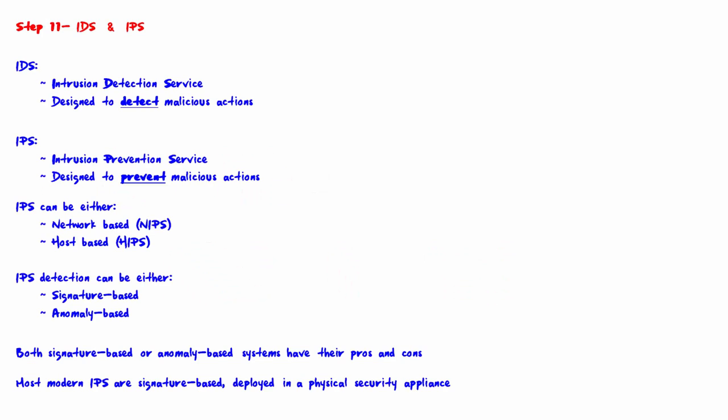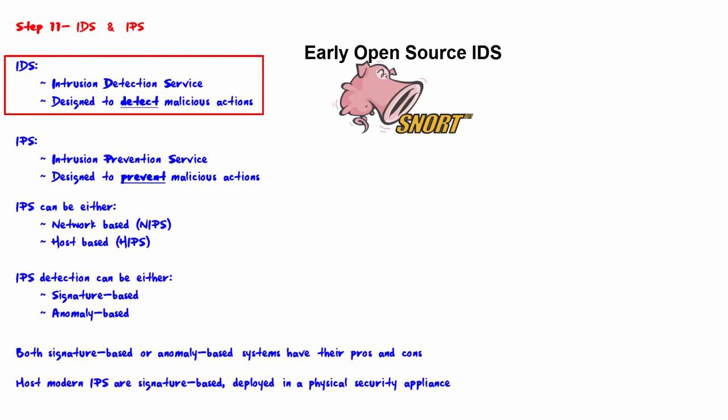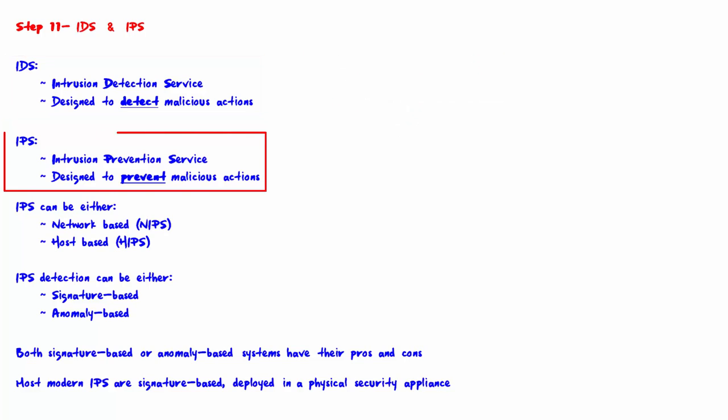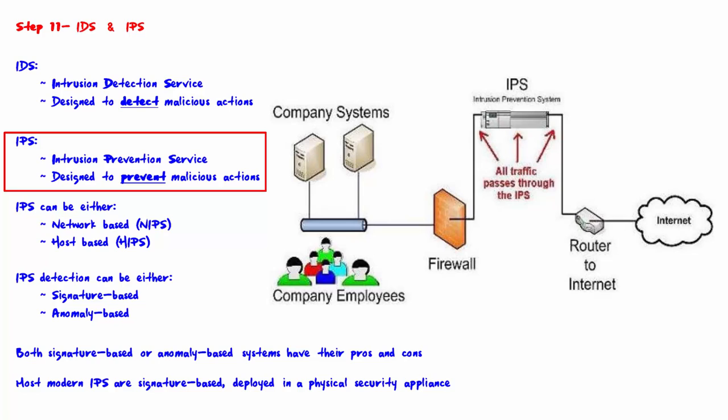Welcome to step 11: IDS and IPS. IDS stands for Intrusion Detection Service, which is designed to detect malicious actions that might occur on the network. IPS is Intrusion Prevention Service, which is designed to prevent malicious actions from occurring on our network. For modern implementations, we almost always deal with IPS, which prevents malicious actions and also logs each incident where a malicious action has been prevented. So we will not deal with IDS here.